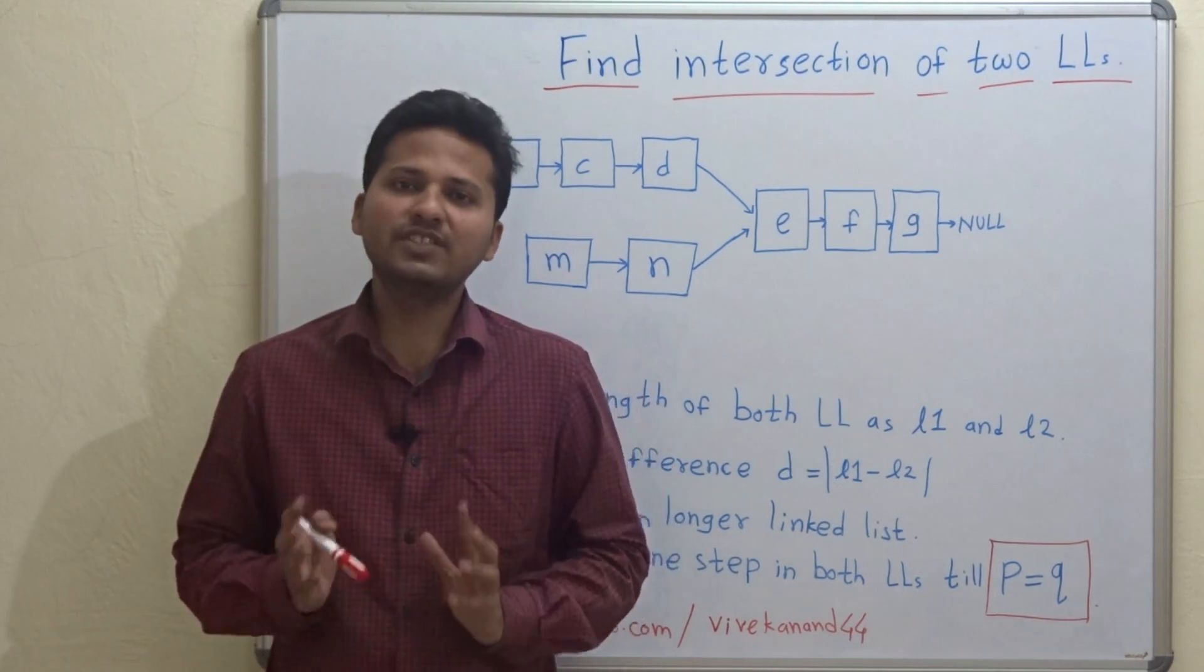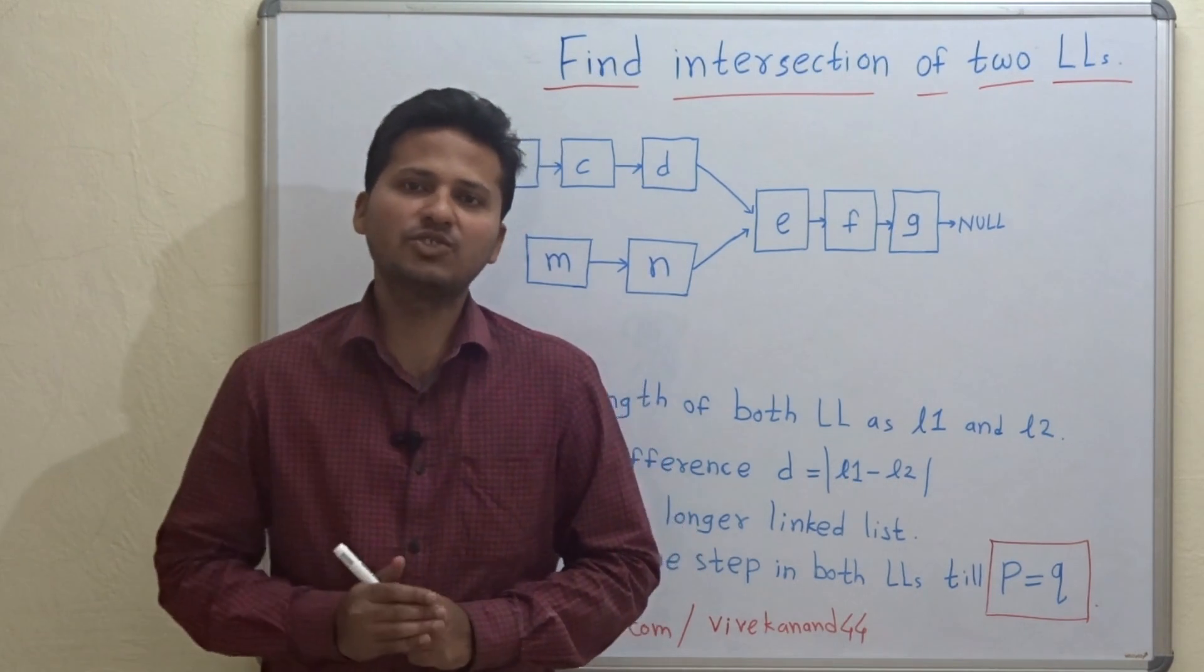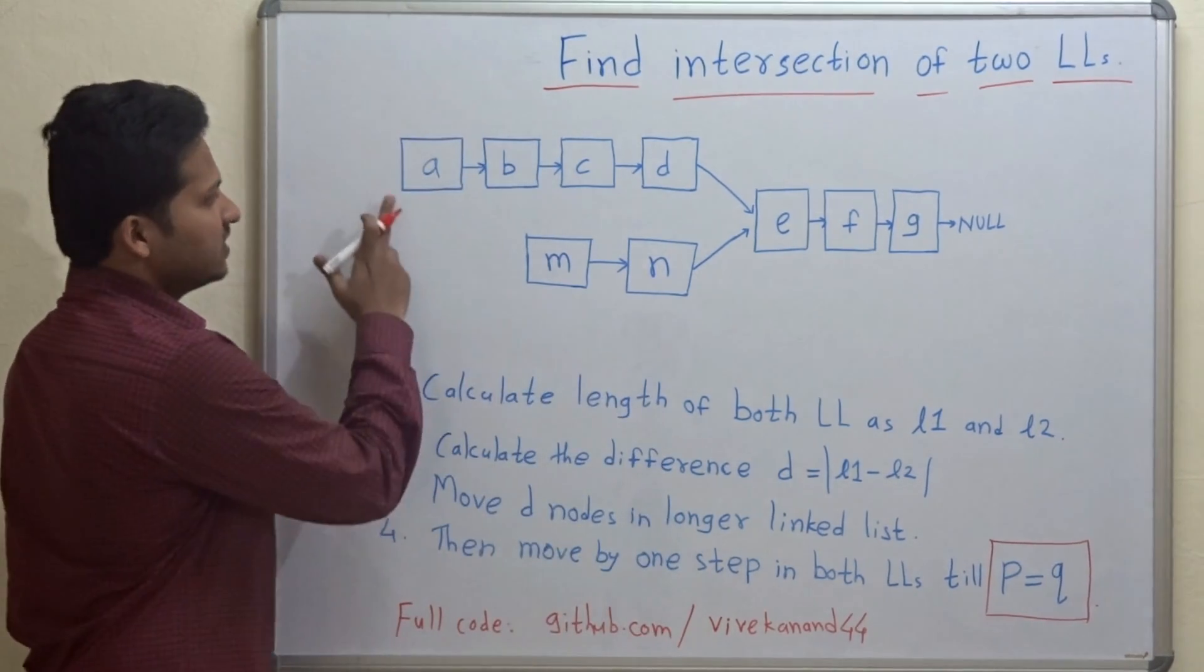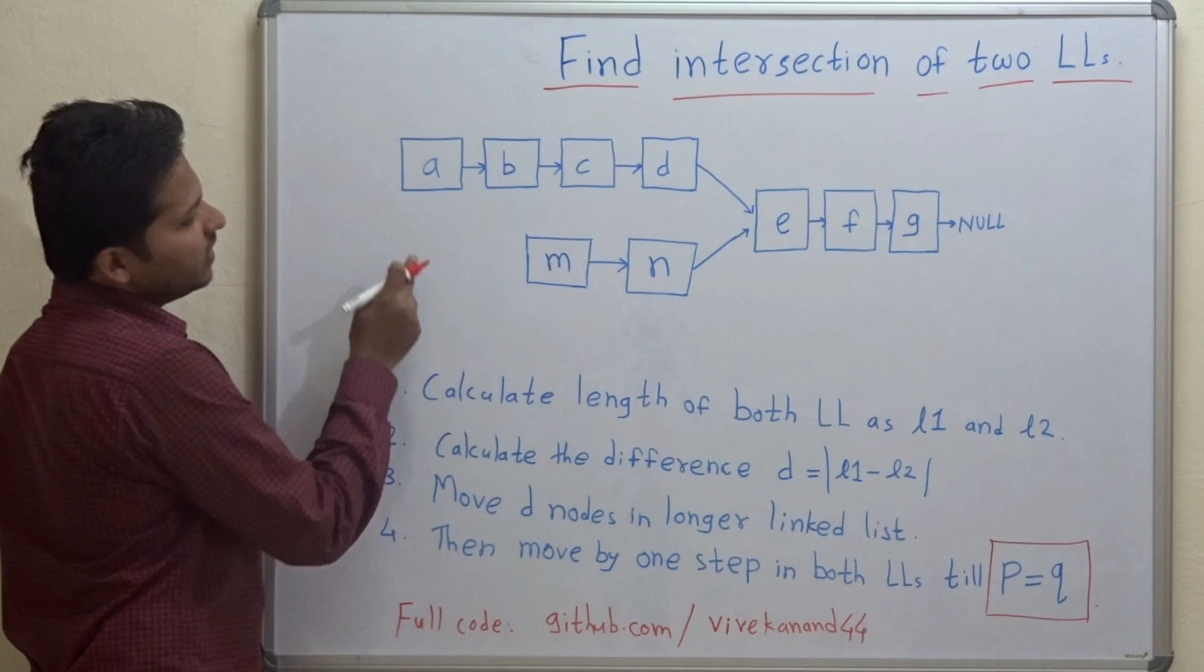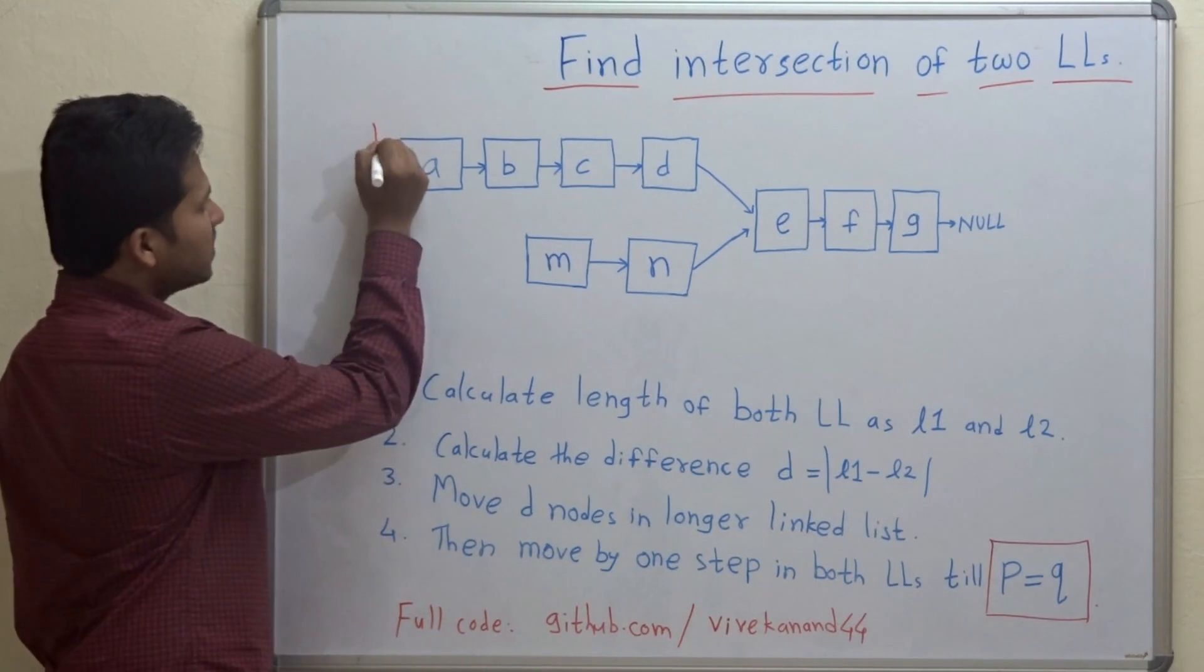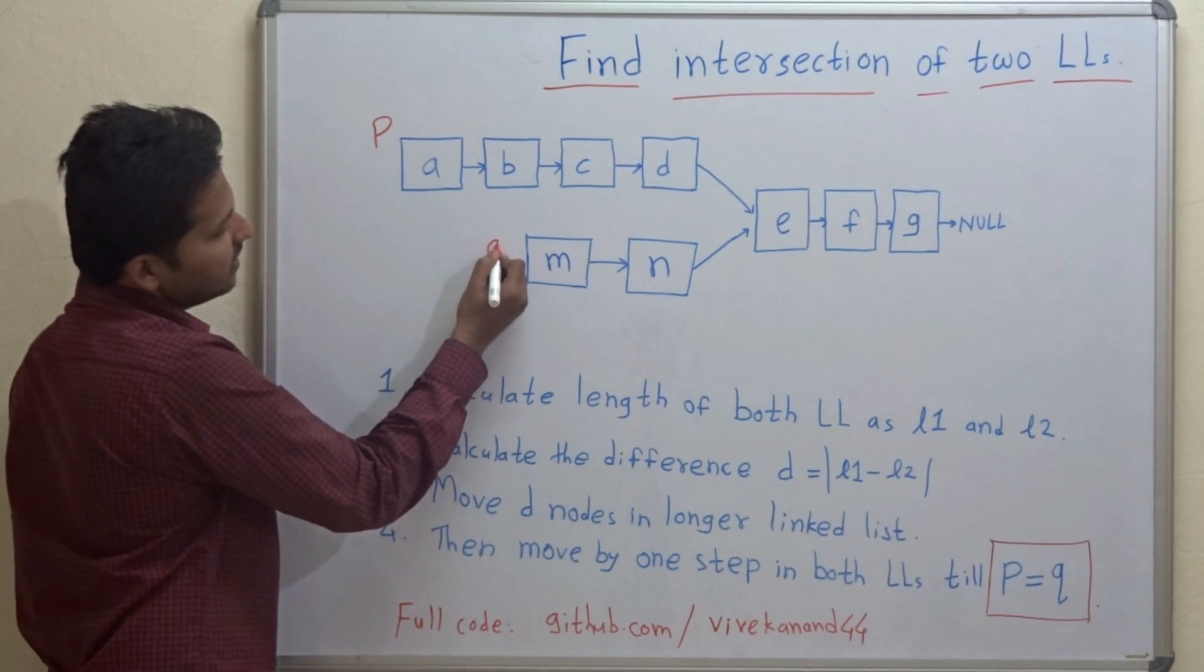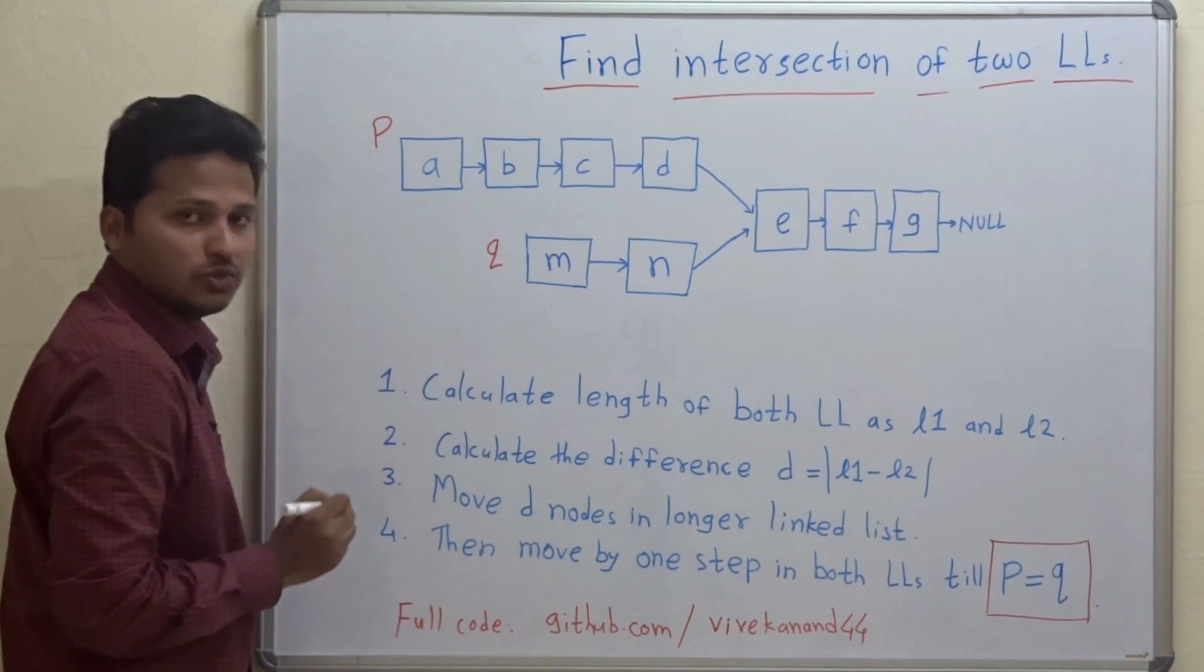Hello friends, today we are going to see how to find the intersection of two linked lists. You can see here these are the two linked lists. The start of one linked list is pointed by P and the second linked list is pointed by Q.